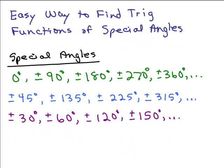In this video, I'm going to show you an easy way to find the trig functions of the special angles. I think of there being three cases of the special angles. The ones that are on the quadrants, 90 degrees apart, so 0, 90, 180, 270, 360, et cetera, in degrees, and it could be plus or minus.